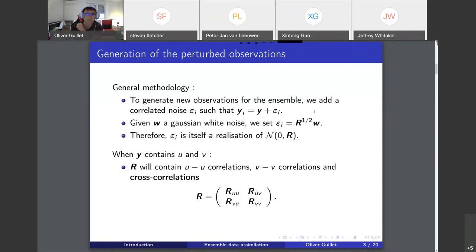How do you do that? Given w, a Gaussian white noise, you use the square root of the observation error covariance matrix to generate realizations of a Gaussian noise with mean zero and covariance matrix R.